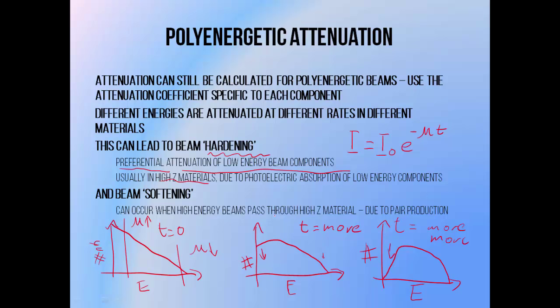Beam hardening usually occurs in high atomic number materials due to photoelectric interactions, since photoelectric interactions are more likely when photon energies are low and the atomic number of the material is high. So when a beam passes through a high atomic number material, its lower-energy components become very likely to undergo the photoelectric interaction and disappear at a higher rate than higher-energy components, which tend to undergo Compton interactions instead — the likelihood of which doesn't increase for high atomic number materials.